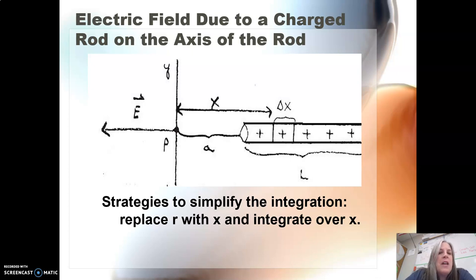So a couple of strategies here. We want to be able to integrate in terms of one variable. So once again, we're going to replace dq with lambda dx. And then we're going to replace r, our distance from each tiny little piece of q from the point of interest, which we call point P. We're going to replace the r value in terms of x, and we're going to integrate over x. So that's how we're going to set our limits.